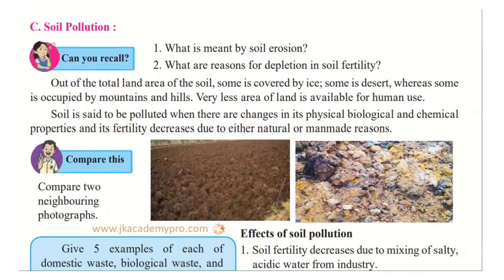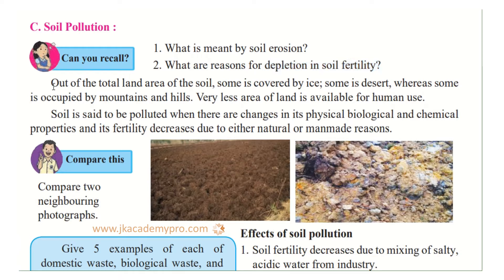Next is soil pollution. Can you recall what is meant by soil erosion and what are the reasons for depletion of soil fertility? Soil erosion is when the top layer of soil gets blown away or washed away by water — that is called soil erosion. Depletion of soil fertility means the fertility of the soil is becoming less and less.